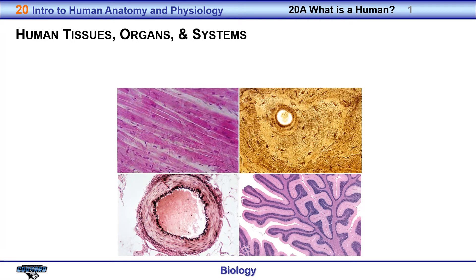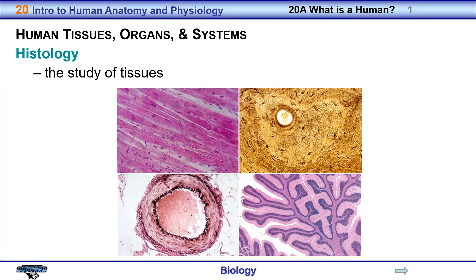Today we want to begin talking about human tissues, and we'll look at those in a little more detail, and then we want to end with the organs and systems, giving you an overview of what will be covered in the remainder of this chapter as well as future chapters. The term histology is the study of tissues, and examples include muscle tissue, bone tissue, the tissue that makes up blood vessels, the brain, and things like that.